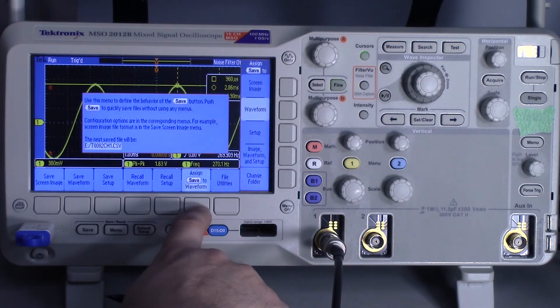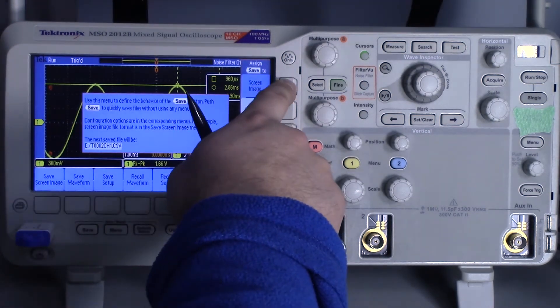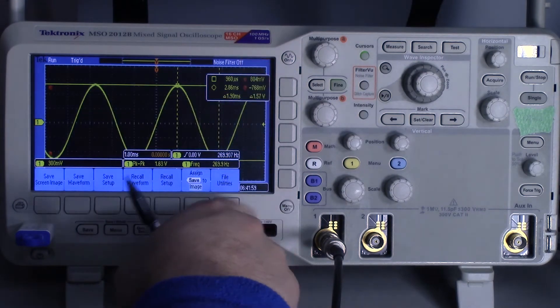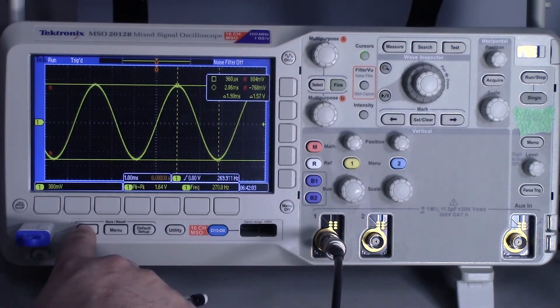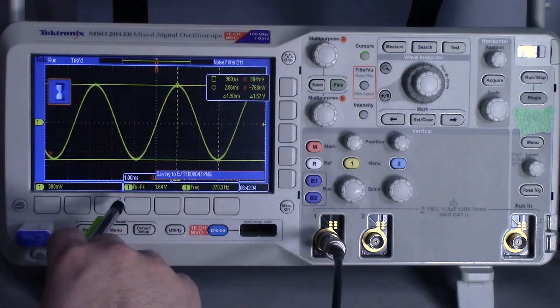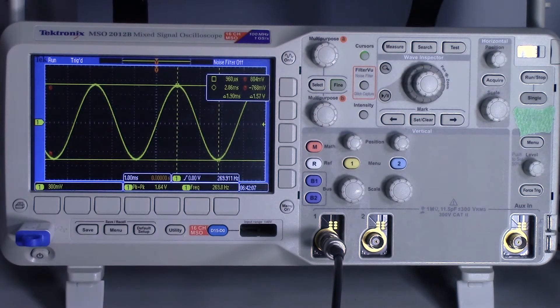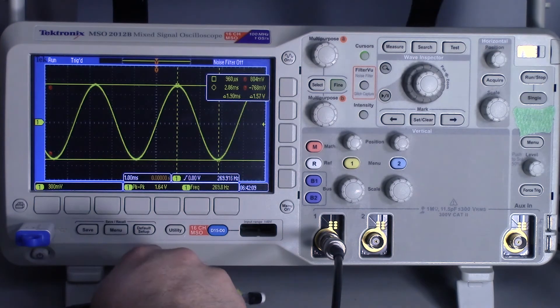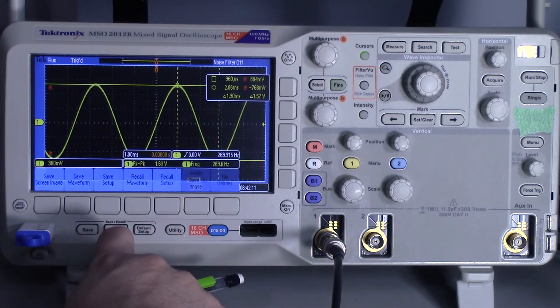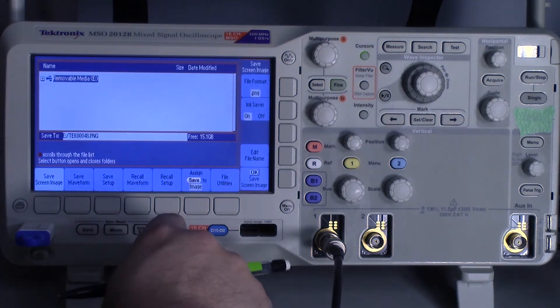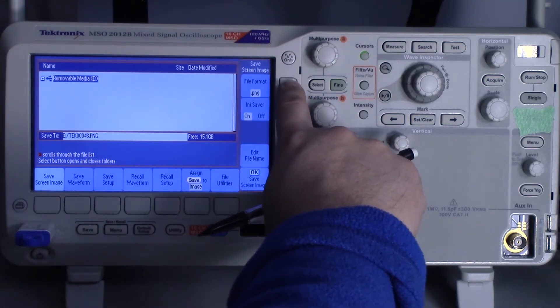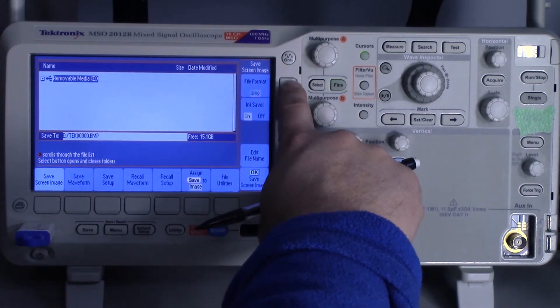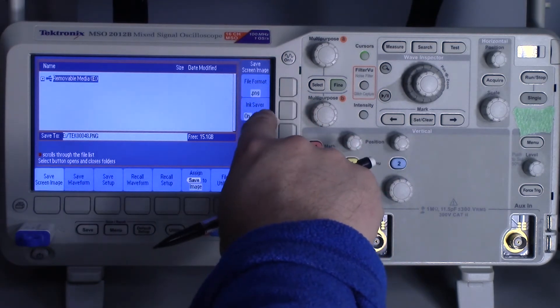If you want to change that, you can go back to screen image. Once I press save, it'll show a PNG file. You can change that if you want a particular format. You can go back to menu, save screen image, and change the format: TIF, BMP, PNG. It doesn't look like it does JPEG.